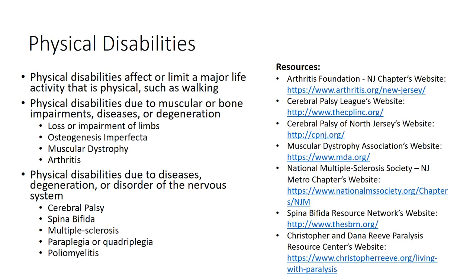Physical disabilities often impact someone for all or most of their life and are usually not considered hidden disabilities. Someone can be born with a physical disability or acquire one later on in life. A physical disability is one that affects or limits a major life activity that is physical, such as walking. Some physical disabilities are due to muscular or bone impairments, diseases, or degeneration. This includes loss or impairment of limbs such as amputation, osteogenesis imperfecta, which is a disorder characterized by fragile bones, muscular dystrophy or progressive loss of muscle strength, and arthritis, which refers to joint pain or disease.